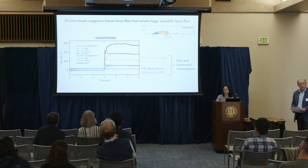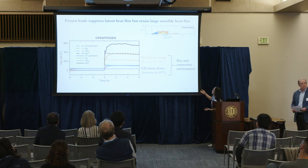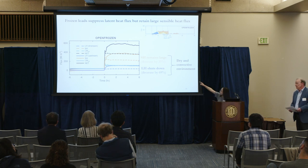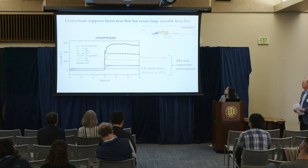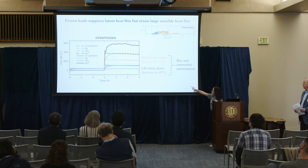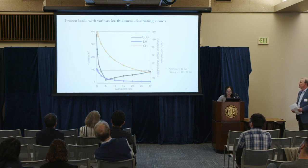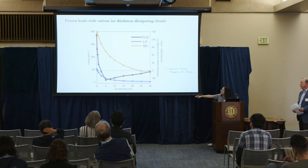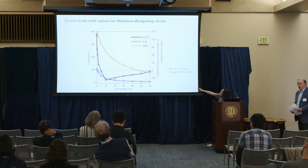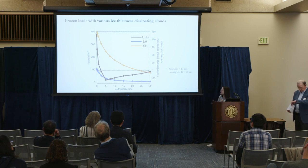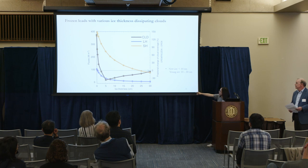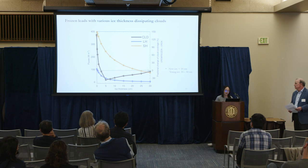The main reason for this, we argue, is because of the surface fluxes over the frozen lead — shown in the dashed lines. Specifically, the unique combination of turbulent fluxes over the frozen lead: relatively large sensible heat fluxes in orange, but almost completely suppressed latent heat fluxes in purple. Together they create a dry and convective environment that is not favorable to clouds and tends to dissipate them. Finally, when we vary the ice thickness over the frozen lead — ranging from 2.5 centimeters up to 30 centimeters — they can dissipate the low-level clouds to various extents.